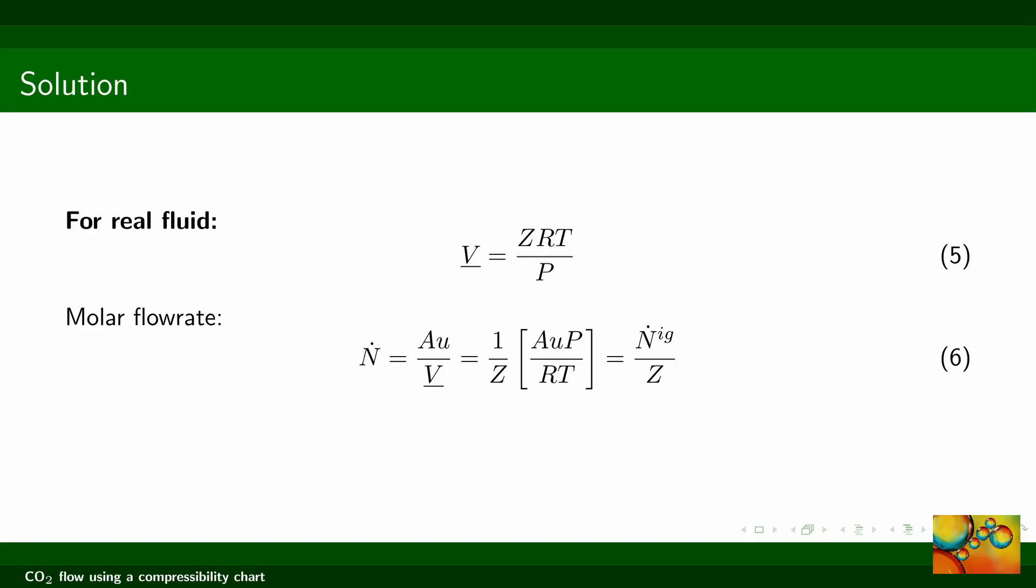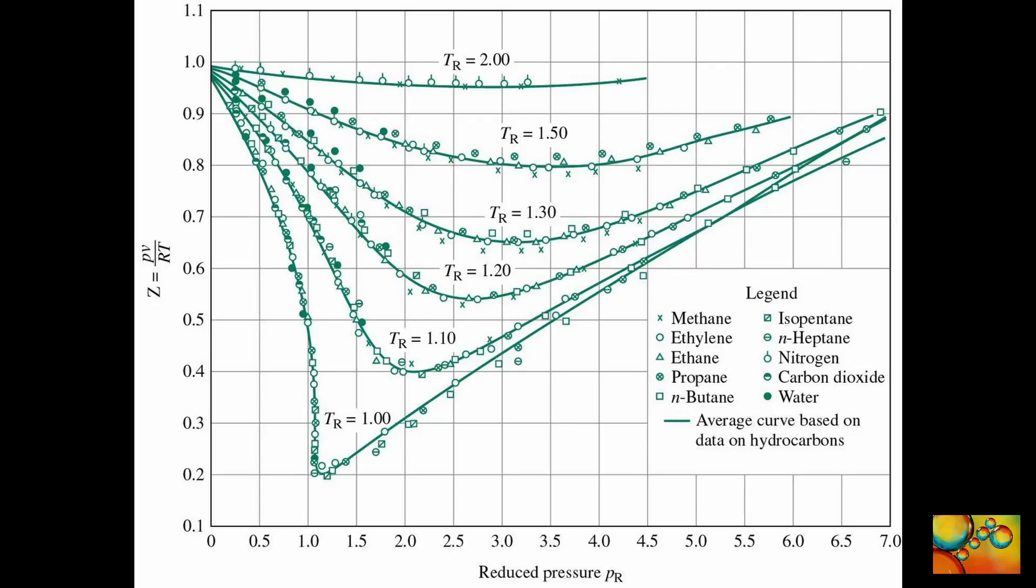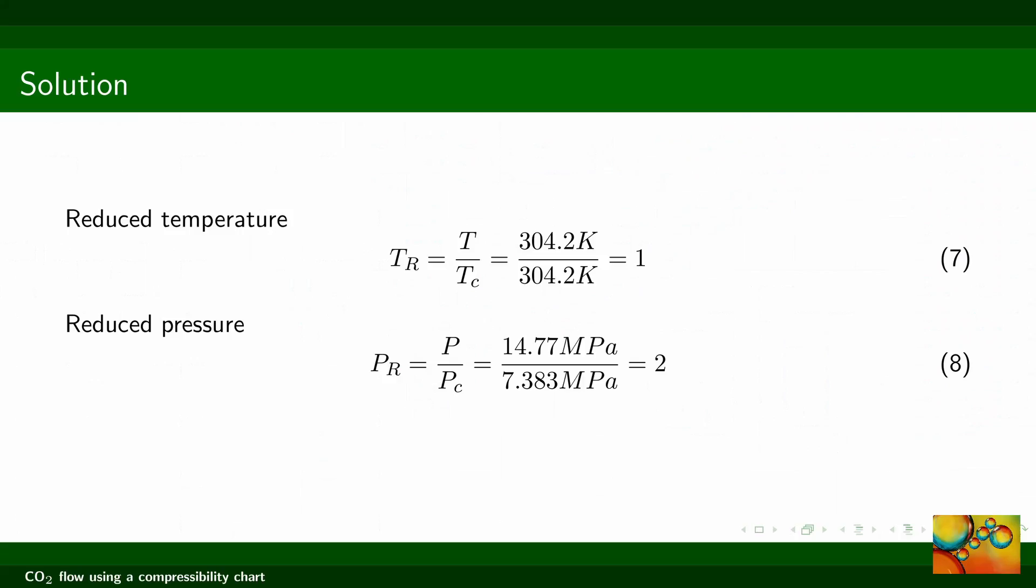The next point is how to get the compressibility factor. This is a compressibility chart. It shows the compressibility factor as function of reduced pressure for different values of the reduced temperature. The reduced pressure is the absolute pressure of the system divided by the critical pressure of the fluid, and the reduced temperature is the absolute temperature divided by the critical temperature of the pure substance.